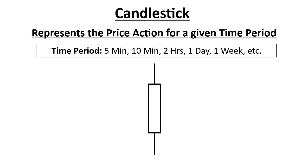So if you're looking at a five minute chart, the candlestick would represent the price action for five minutes. If you're looking at a one day chart, a candlestick would represent the price action for one day. The price action is the flow of prices for that period of time — how the price is flowing up or down. So the candlestick basically tells us everything we need to know about the price for that given time period.